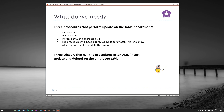We need three triggers that call the procedures after DML — INSERT, UPDATE, and DELETE — on the employee table: after INSERT on employee, after DML UPDATE on the column department_number. So now we have a little design we can use.